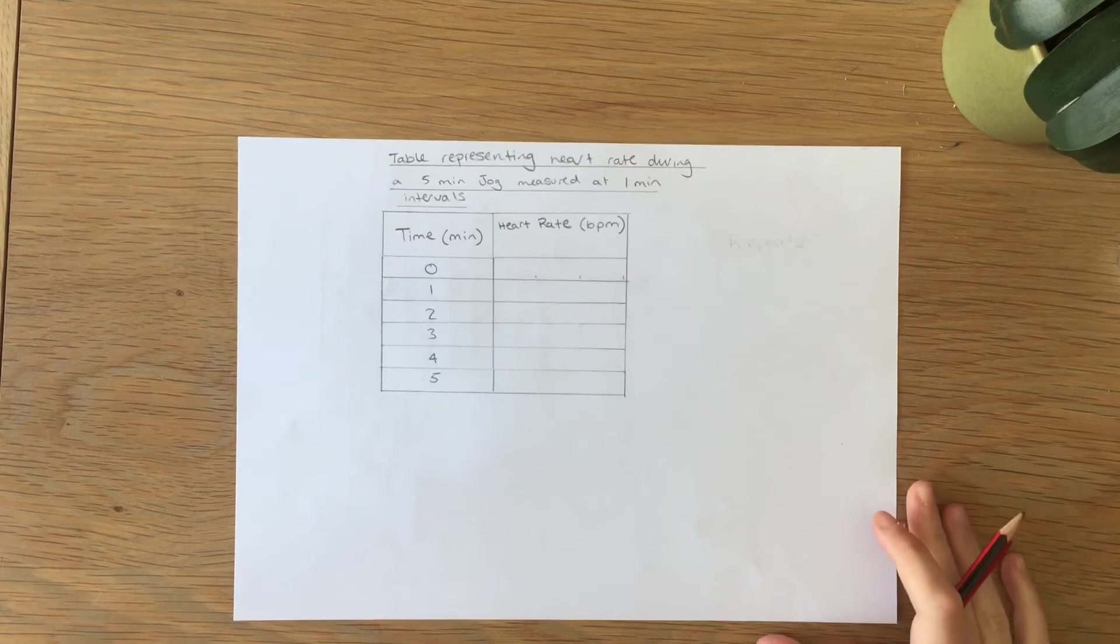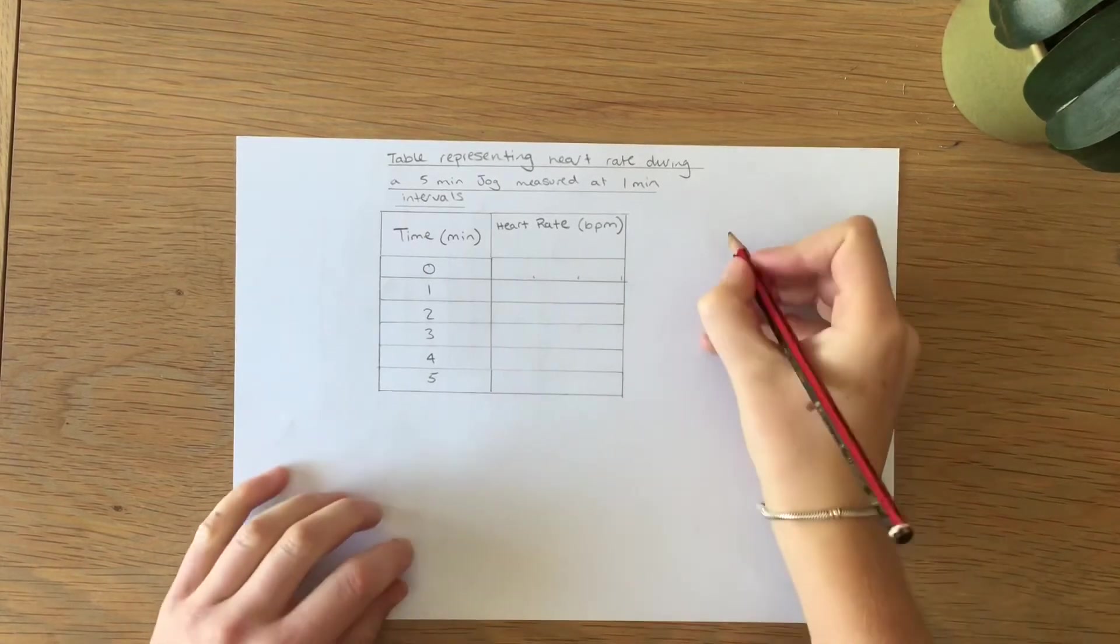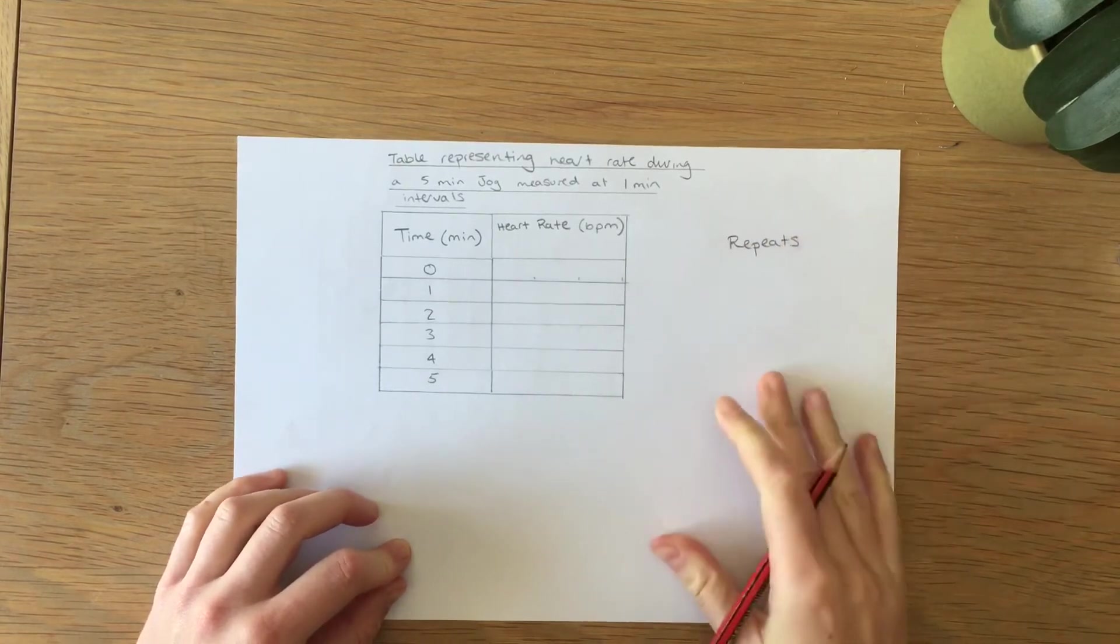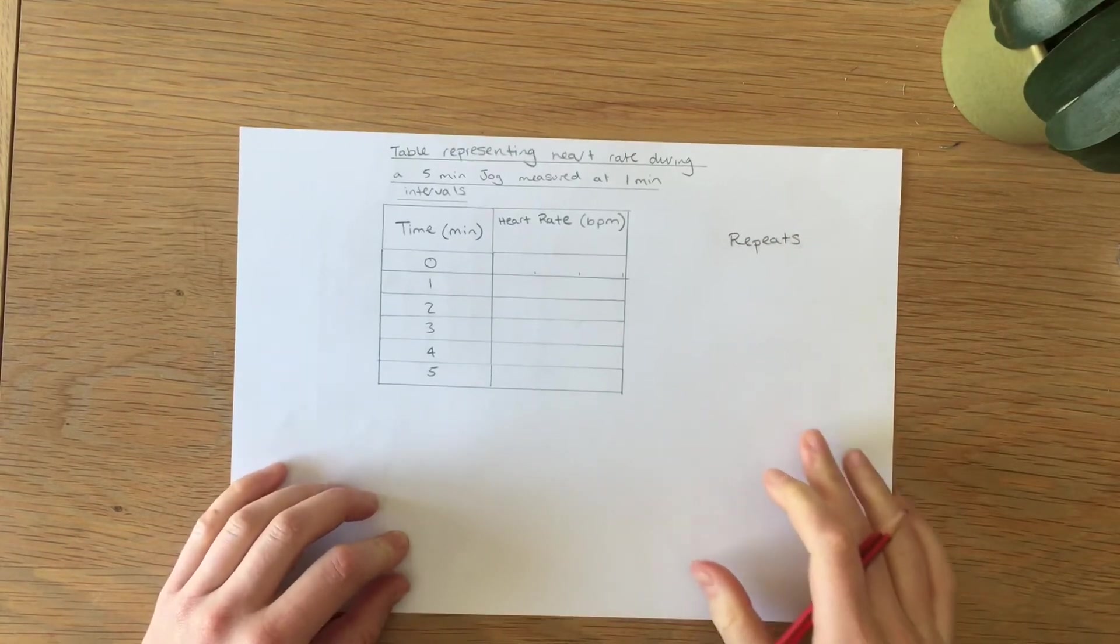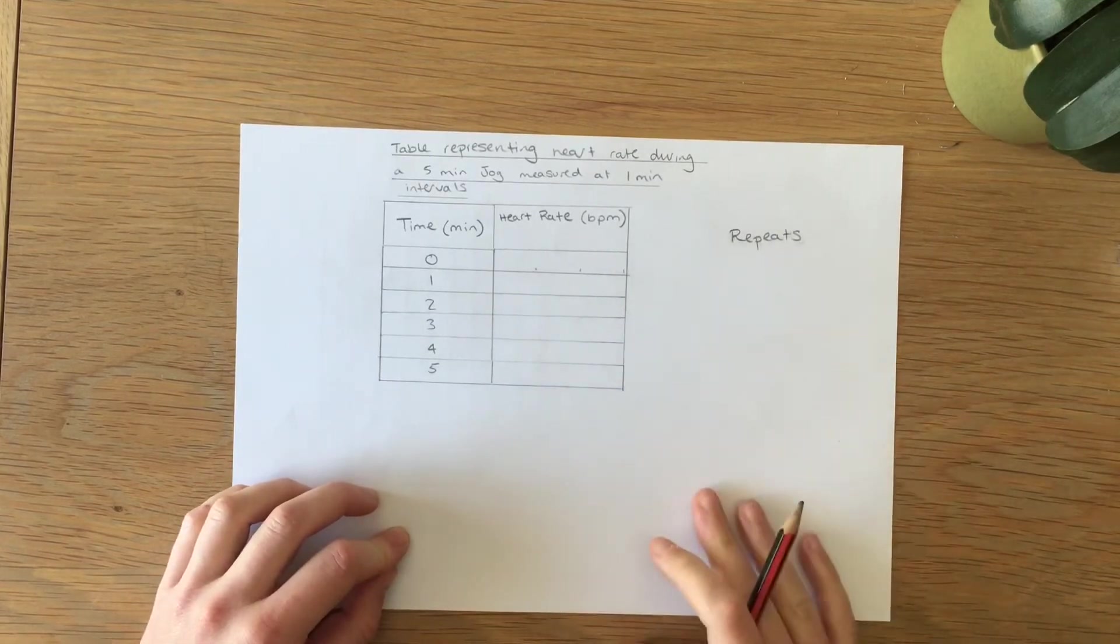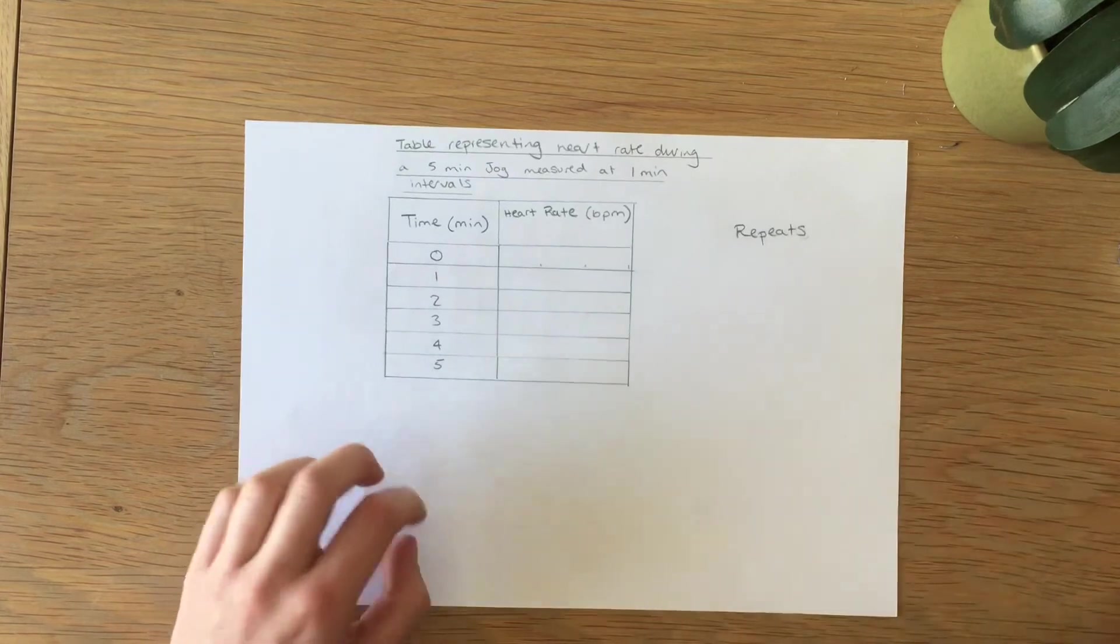For many of your tables you will want to include repeats, as all good scientists want to repeat their experiments to ensure their experiment is reliable. So how do we represent that on a table? It's really nice and easy.